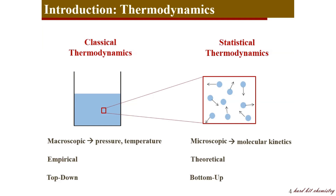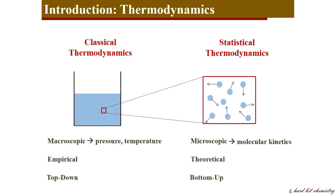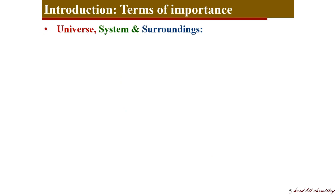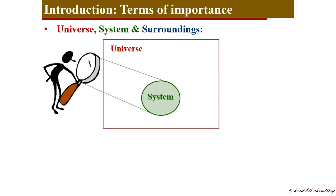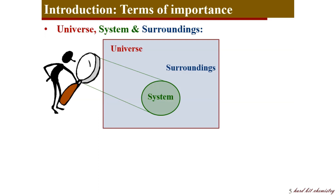Now we will see some important terms we need to know before going into thermodynamics. First is universe, system, and surroundings. The universe is the entire world. In that universe, you focus on only a small part — whatever the size of the system may be — and that small part is called your system. The rest of the universe is the surroundings. Systems are broadly of three types: open system, closed system, and isolated system.